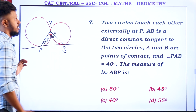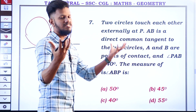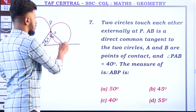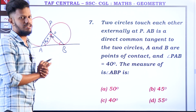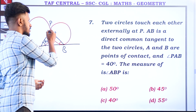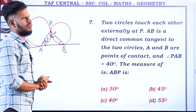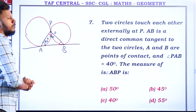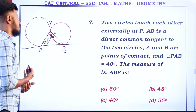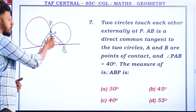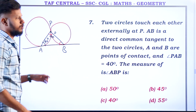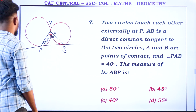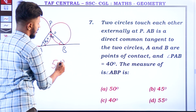It is a concept — a common tangent that is externally touching. At the point, a triangle is formed. If you look at the angle, it is 90 degrees. You know it is 30 degrees. Now if you look at this angle, it is 80 degrees — then it is 100 degrees, then it is 50 degrees. The answer to the angle is 50 degrees.